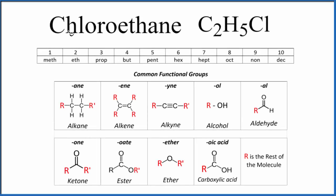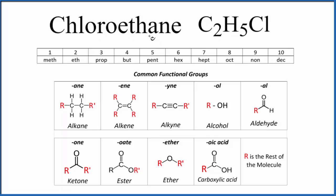Let's write the structural formula for chloroethane. We'll also look at the Lewis structure for chloroethane. The molecular formula, the chemical formula, is C2H5Cl. But if we're just given chloroethane, we know that it ends in A-N-E, and that means it's an alkane.